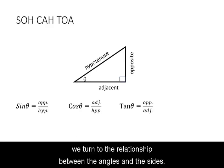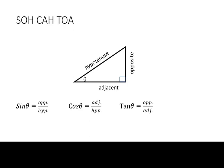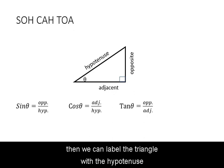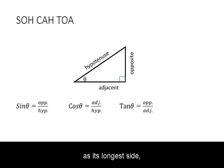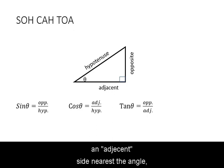Next we turn to the relationship between the angles and the sides. If we pick one of the acute angles, theta, then we can label the triangle with the hypotenuse as its longest side, an adjacent side nearest the angle, and the opposite side farthest from that angle.